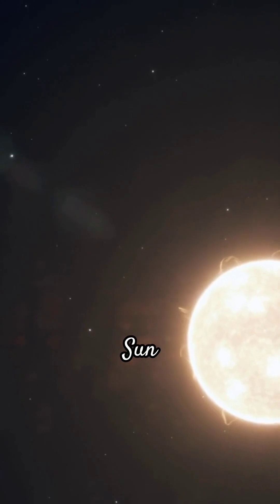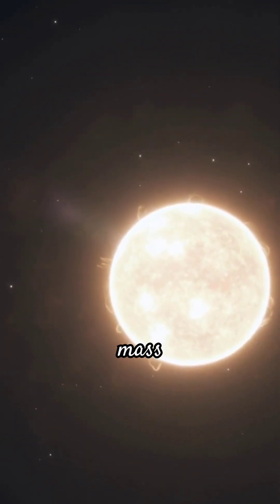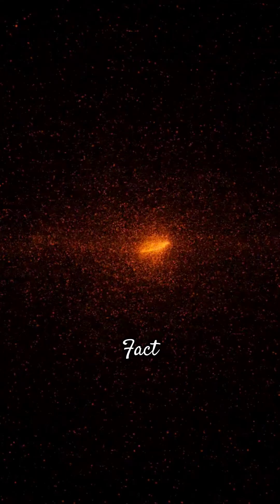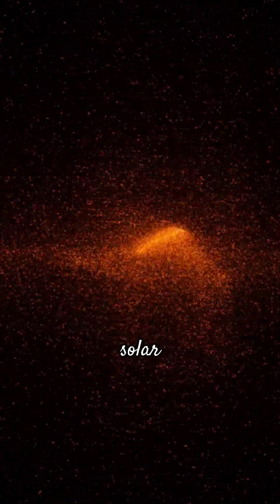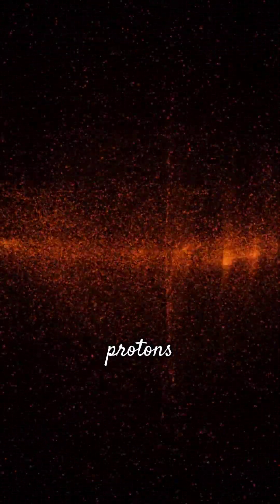Fact number five, the Sun makes up 99% of the mass of our solar system. Fact number six, the Sun emits solar winds full of particles like protons and electrons.